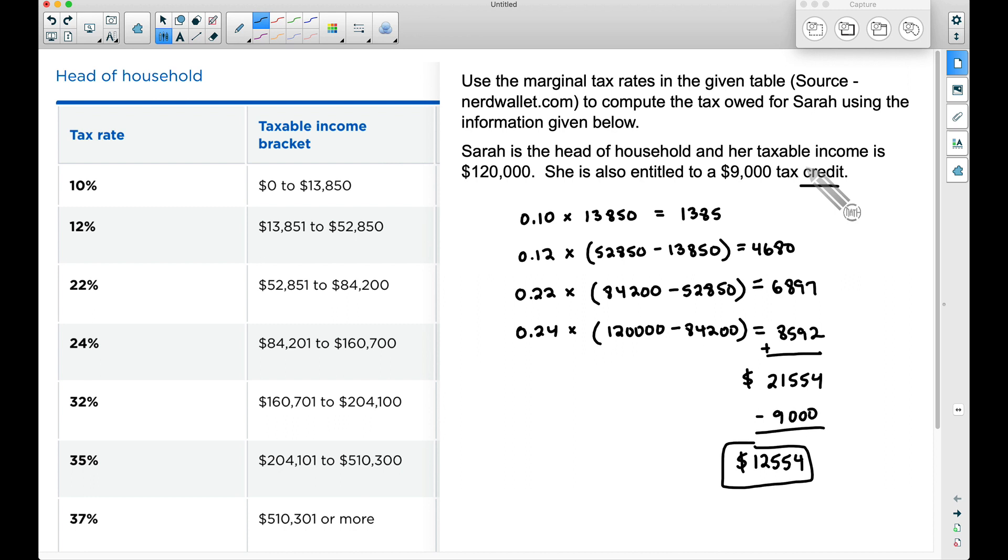I can do more videos on that in the future. And there you have it: finding the amount of tax owed in this particular example using the marginal tax rates table from nerdwallet.com for the year 2019-2020 tax season. If you like what you see and you haven't already, please consider subscribing. If you have any questions or similar examples to this problem here, leave a comment below. That's it for this video. I hope it helped.